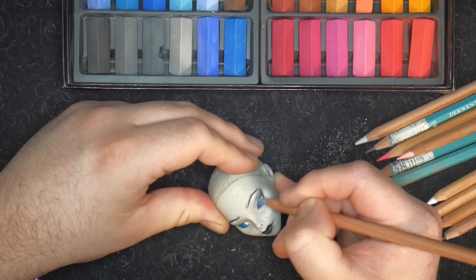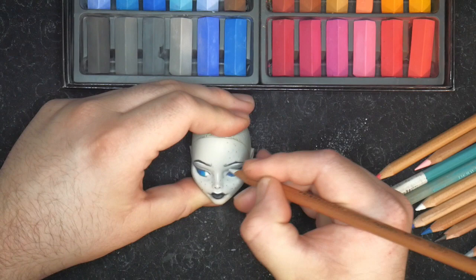Now with her makeup, I am giving her a smokey eye with a harsh cut crease. To achieve this, I am just layering blacks, grays, and whites over each other.